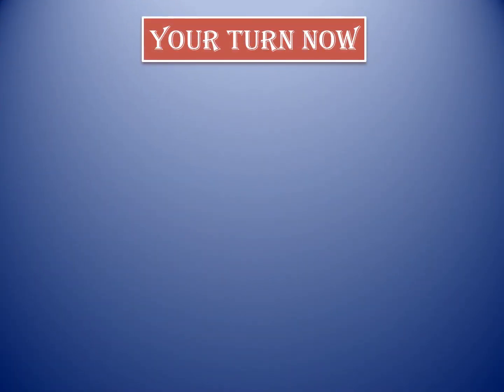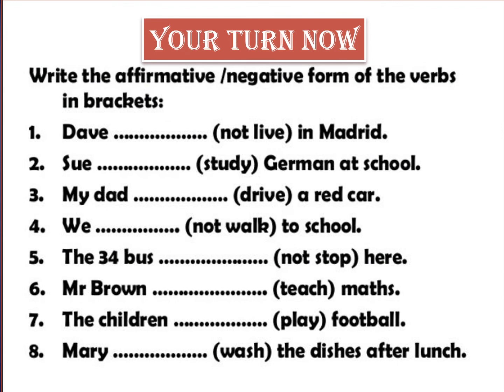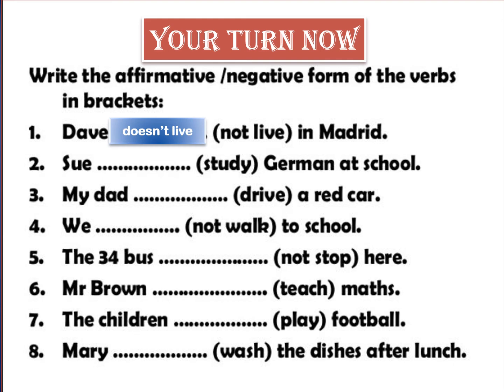Now it's your turn. Write the affirmative or negative form of the verbs in brackets. Number one: Dave (not) live in Madrid. 'Not' means negative, so we use DON'T or DOESN'T. Dave is a boy, so he likes S — we use DOESN'T: Dave doesn't live in Madrid. Number two: Sue (study) German at school. Sue is a girl, she likes S, but the verb ends with Y after a consonant, so cross the Y and add -IES: Sue studies German at school.